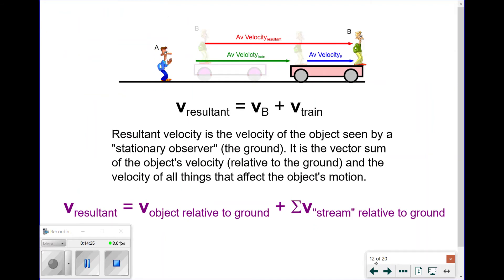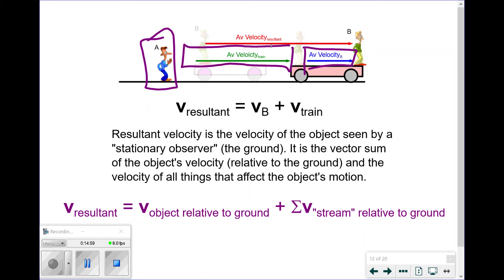The resultant velocity of an object seen by a stationary observer is simply the velocity of the object plus the velocity of the streams affecting it. For our person B case, the resultant velocity as seen by the ground — which we consider stationary — is the velocity of the individual person plus the velocity of the train. The resultant is the summation of all velocities; if two or three things affect the object's motion, we include them all, adding vectors one on top of another. This must always equal the resultant displacement over time.